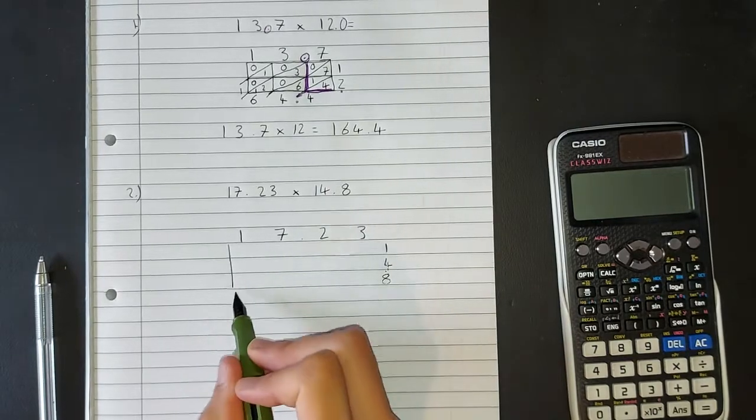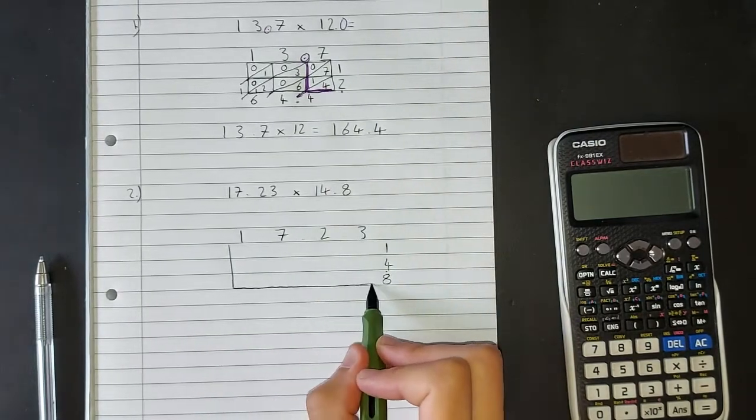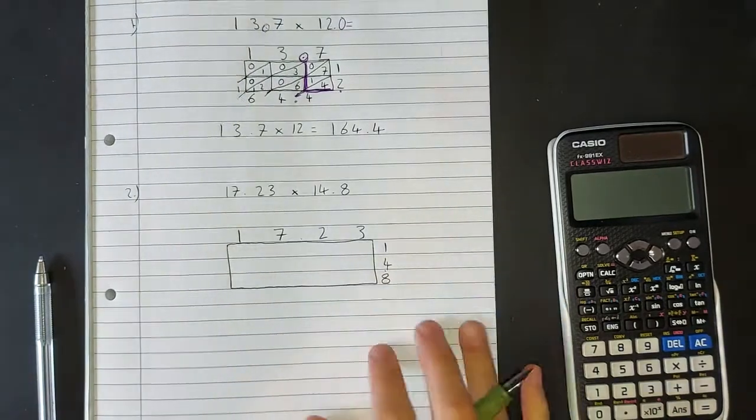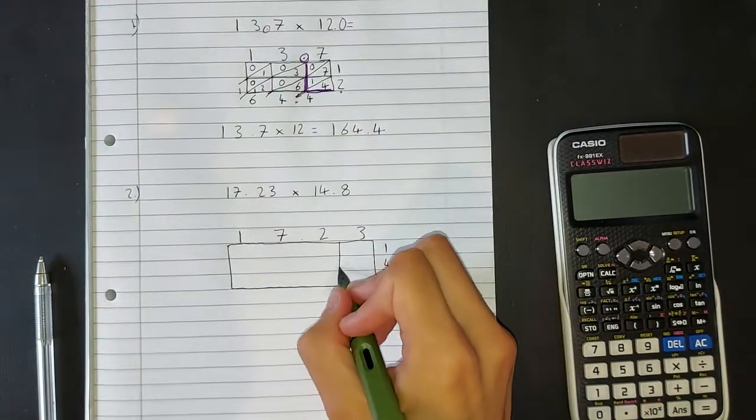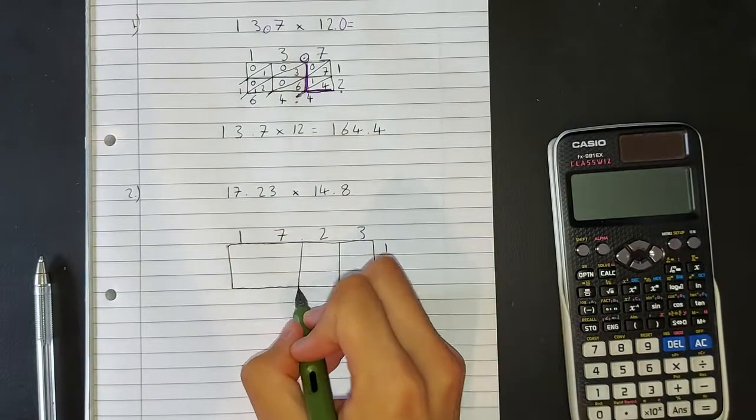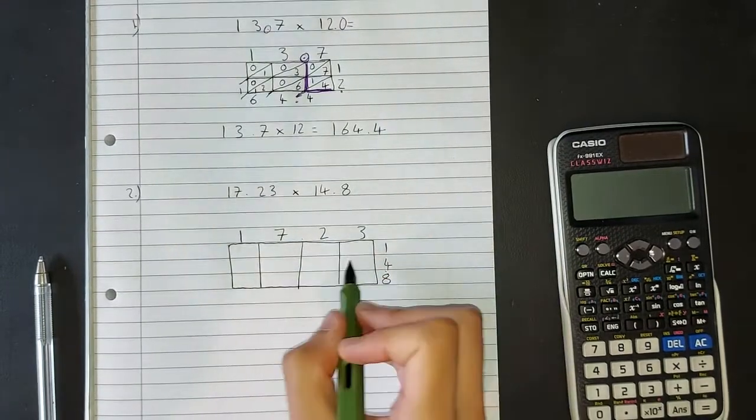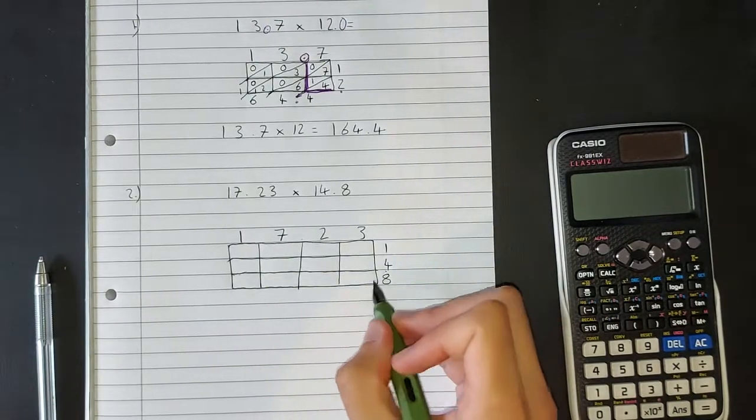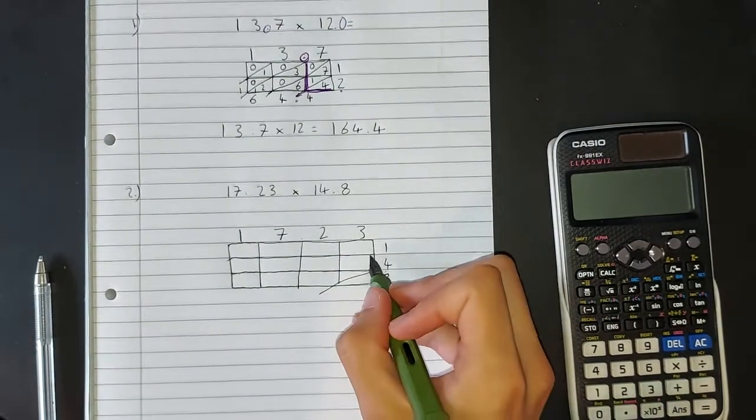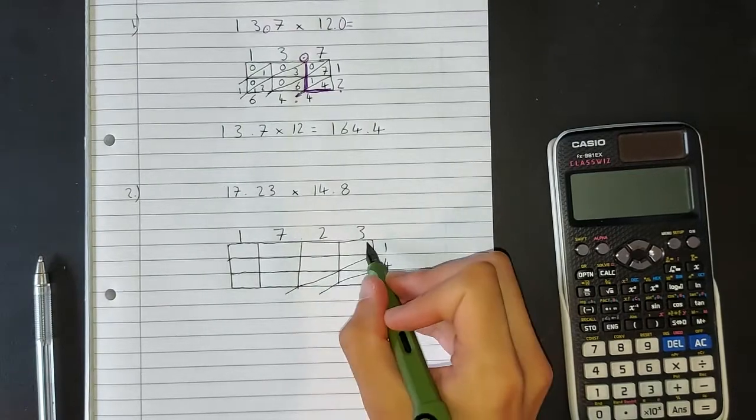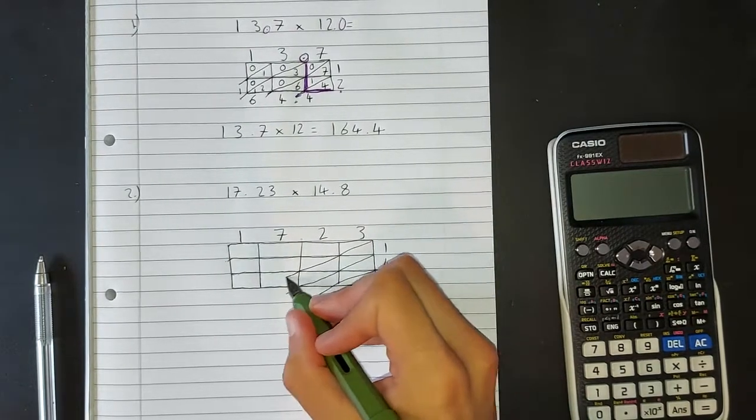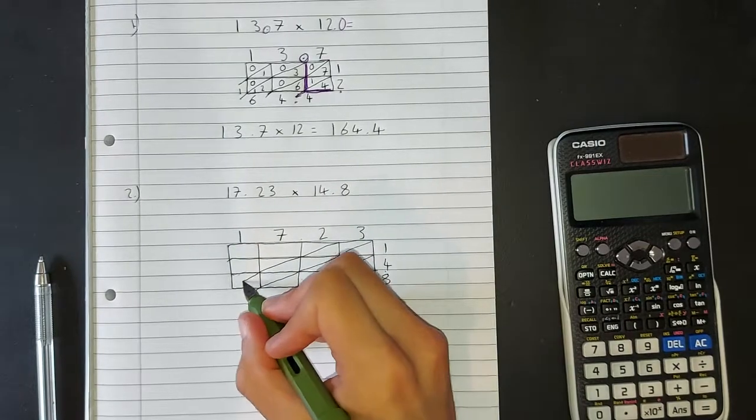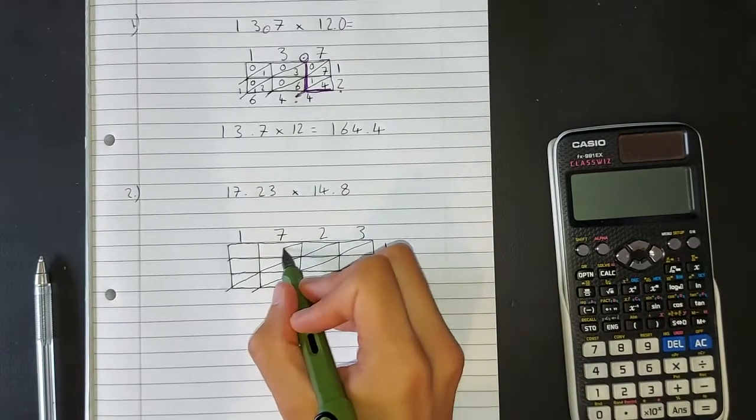Draw our box, something like so. And add your grid in. And your diagonals. Don't forget to extend your diagonals just beyond the last box.